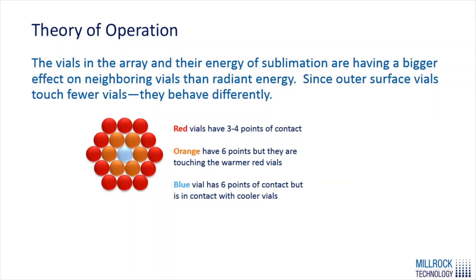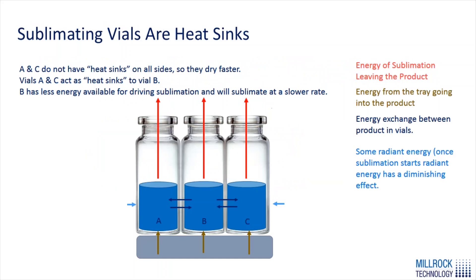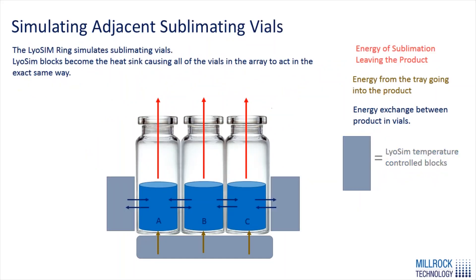The theory behind LiOSIM is based on the edge effect: vials on the outside of an array are only in contact with three or four other vials. Not just the very outside rows, but the second row and to some extent even the third row also experiences some edge effect due to radiant and convective energy. The solution is to bring in temperature-controlled LiOSIM blocks that simulate the presence of a wider array, creating uniform heat flow for edge vials as if they were center vials.